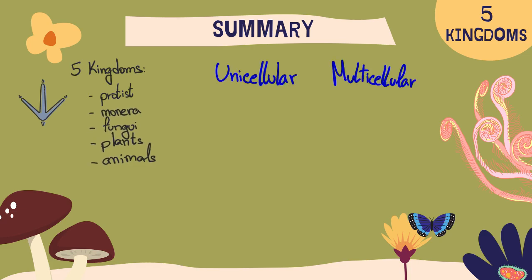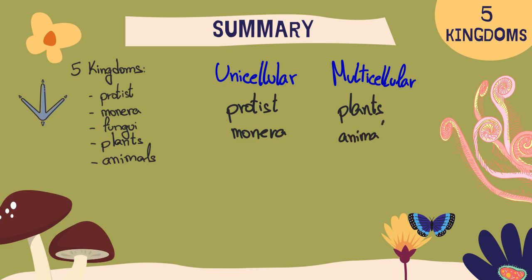We can also divide them into unicellular or multicellular organisms. In unicellular we will have the organisms in the protist kingdom and in the monera kingdom. With the multicellular organisms we will have the plant kingdom and also the animals. And at last, we have the fungi — in the fungus kingdom we have living things in both unicellular and multicellular organisms.